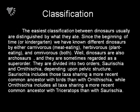We all know how to classify dinosaurs. We know them as carnivorous, meaning meat-eating; herbivorous, which is plant-eating; and omnivorous, which means both. But there are also other ways to classify them. Dinosaurs are also called archosaurs and they are sometimes regarded as a superorder. They are then divided into two orders called Saurischia and Ornithischia, depending upon their pelvic structure.